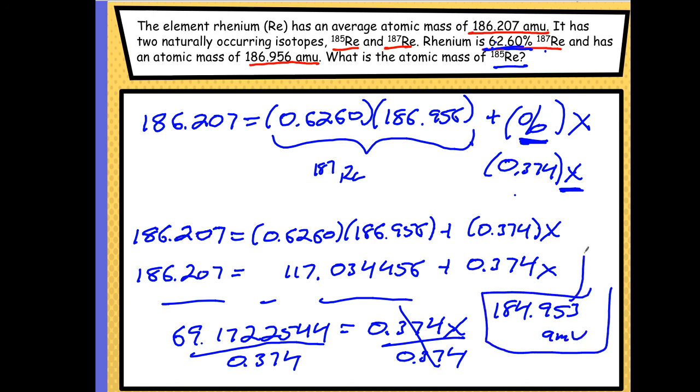So this is my x, that is the missing mass of that isotope, 184.953. It's within reason because the average mass is 186.207, and the first isotope is 186.956, and so 184.953 is within reason of what that mass of that isotope would be.